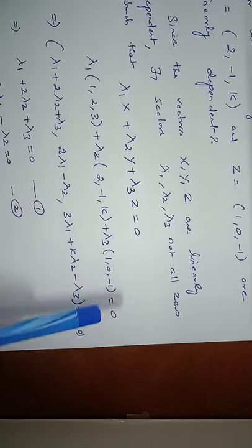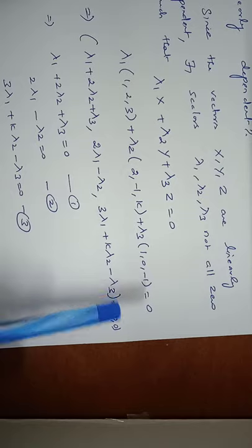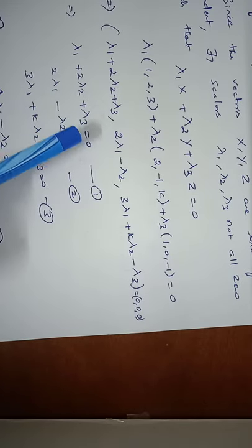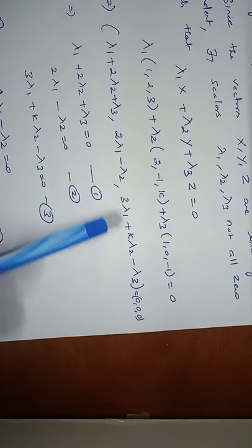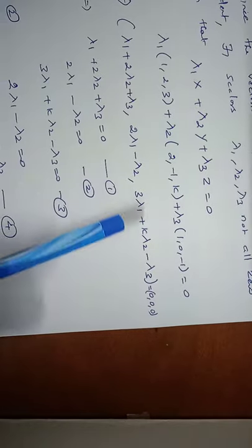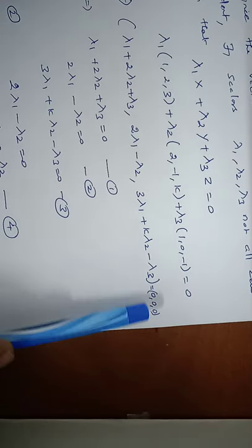Setting each component equal to zero gives three equations: Equation 1: Lambda 1 + 2·Lambda 2 + Lambda 3 = 0. Equation 2: 2·Lambda 1 - Lambda 2 = 0. Equation 3: 3·Lambda 1 + K·Lambda 2 - Lambda 3 = 0.